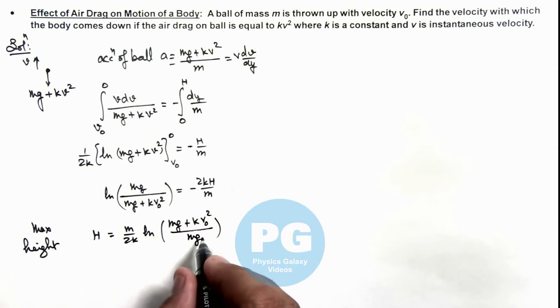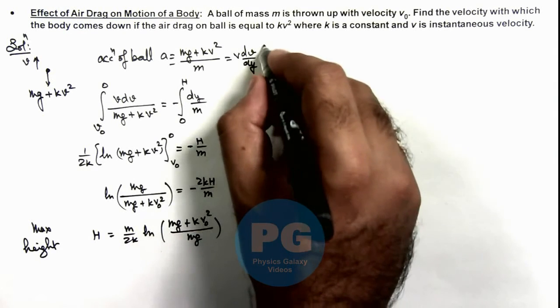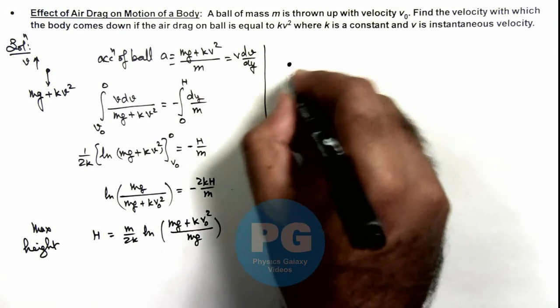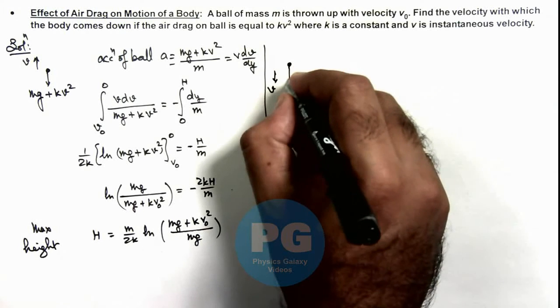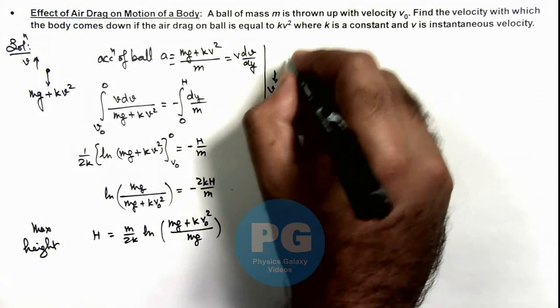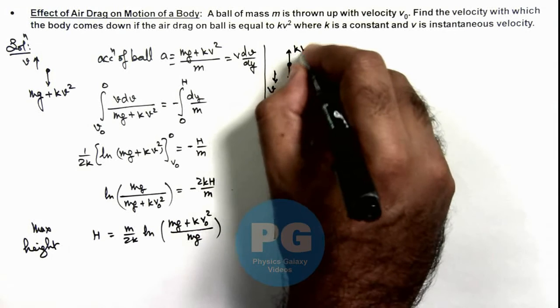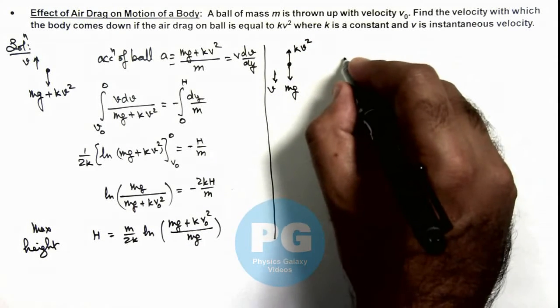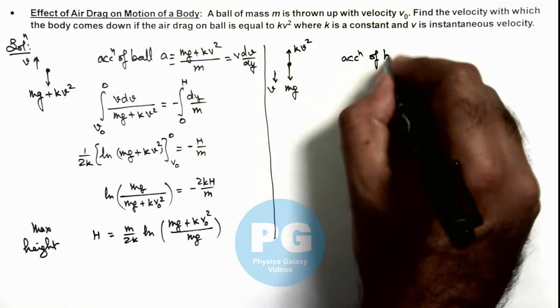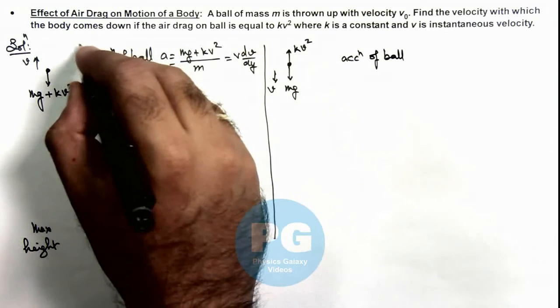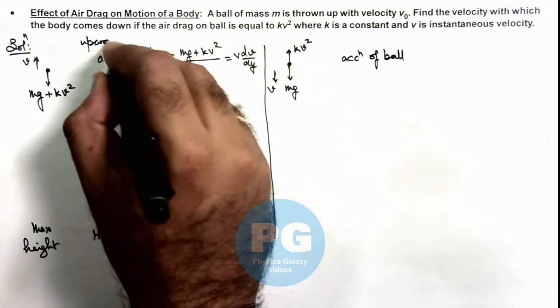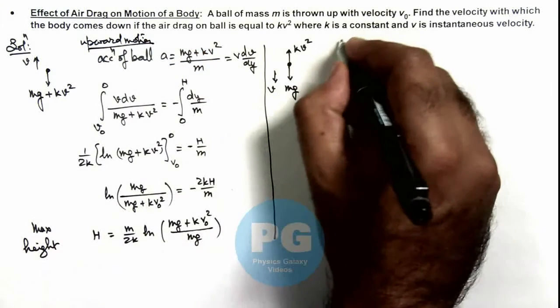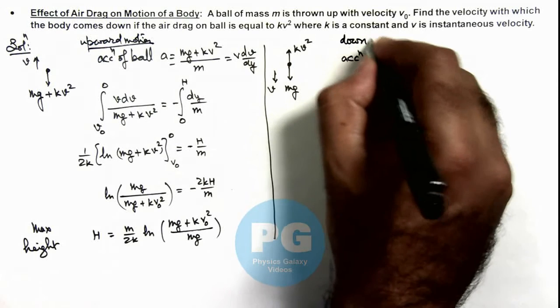And using this maximum height we can study about the downward motion of ball here. If ball is coming down with a speed v, then its weight is accelerating but air drag would be opposite to it with force kv². So in downward motion we can write acceleration of ball. Here you can write this is upward motion of ball, and here we are analyzing the downward motion of ball.